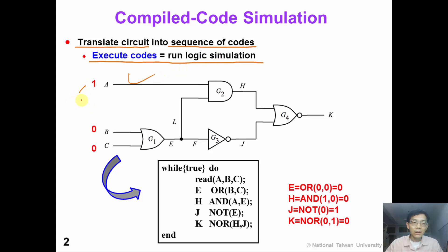For example, given the input ABC equal to 100, we're reading the value of ABC and we execute this code where E is equal to OR(B,C). So we can obtain the value of E equals to 0. And then we execute the next line of code. So we know that H is AND(1,0), so the result is 0.